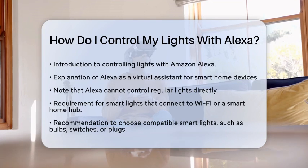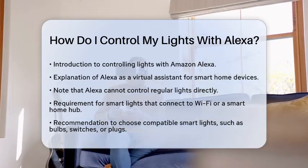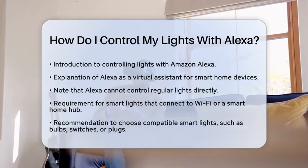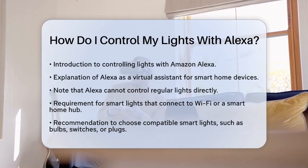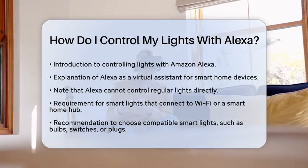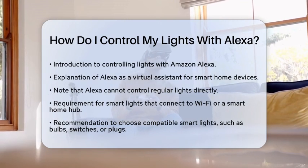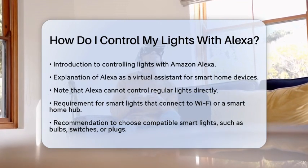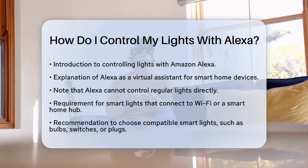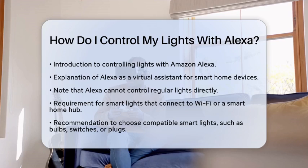First, you need to understand that Alexa is Amazon's virtual assistant. It responds to your voice commands and can manage compatible smart home devices. However, Alexa cannot control regular lights directly — you need smart lights that connect to Wi-Fi or a smart home hub.